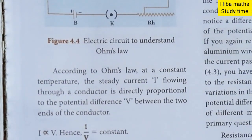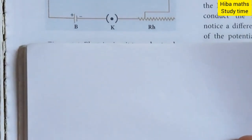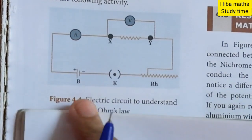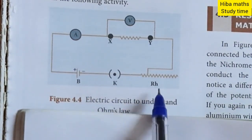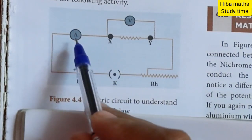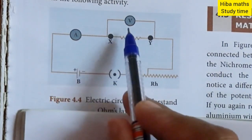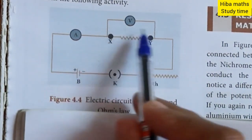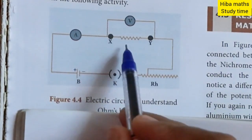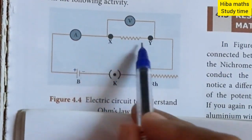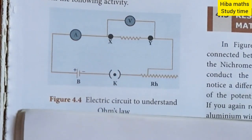Now let's explain and define Ohm's Law. We have a circuit in the book. In the circuit, there is a battery, a key, a rheostat, an ammeter for current, a voltmeter for potential difference, and two points with a resistance.